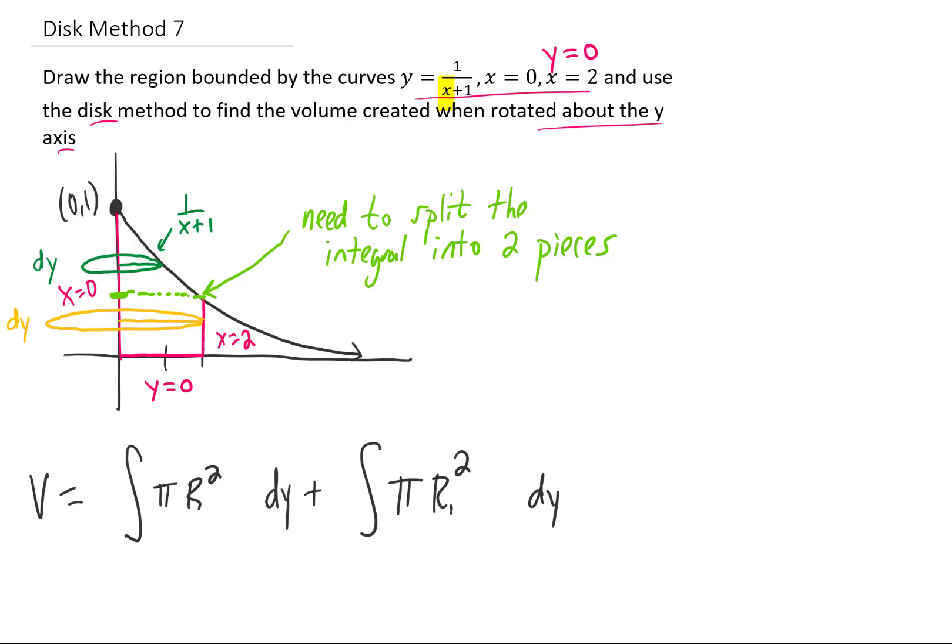And it would probably be a good idea to first find what y value splits this region. Well, this y value is given by the function y equals one over x plus one when x equals two. So our y value is one over two plus one, or one third. In other words, we're going to have one integral that goes from zero to one third and a second integral that goes from y equals one third to y equals one.